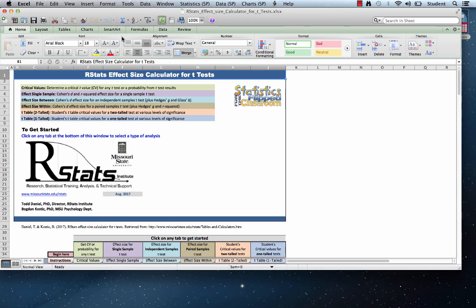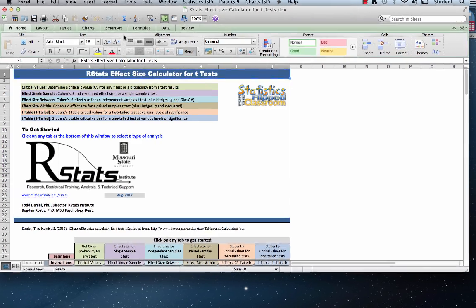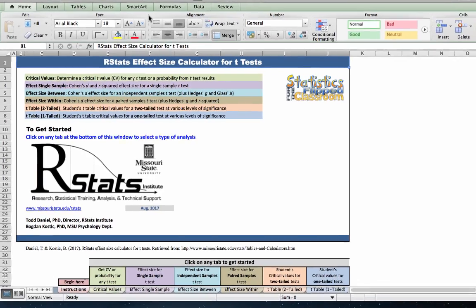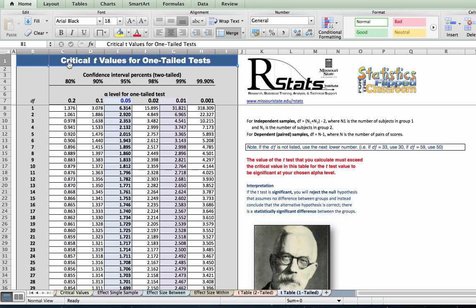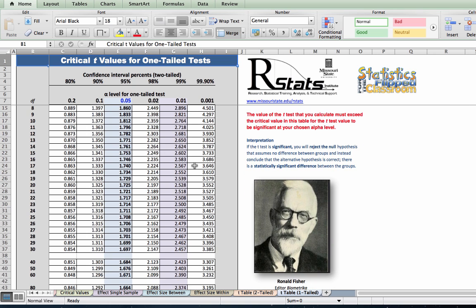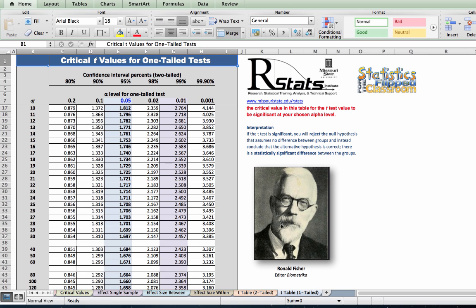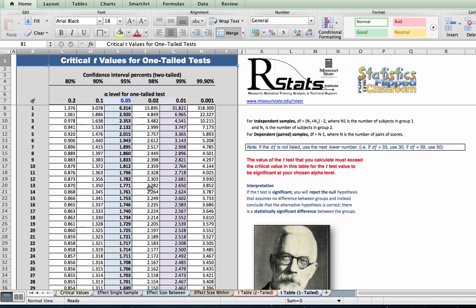Alternatively, you can download the RStats effect size calculator for t-tests and use it to determine your critical value. You can see here the six things that you can do with this effect size calculator spreadsheet. If you click on the periwinkle colored tab, you will see a full table of critical values for one-tailed tests, complete with a picture of Ronald Fisher. Now we could use this table, but there's something else that I want to show you.